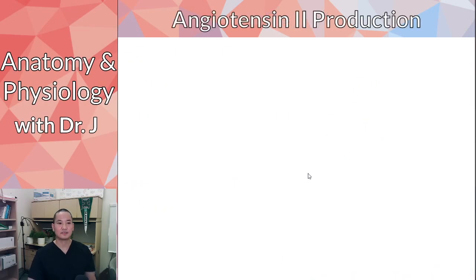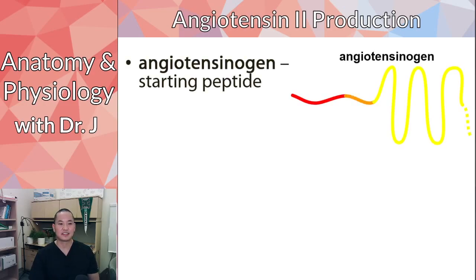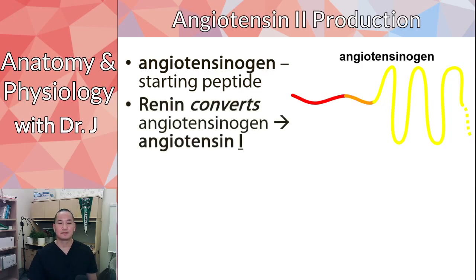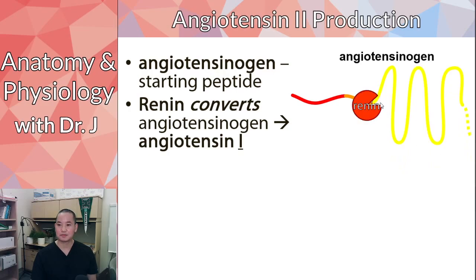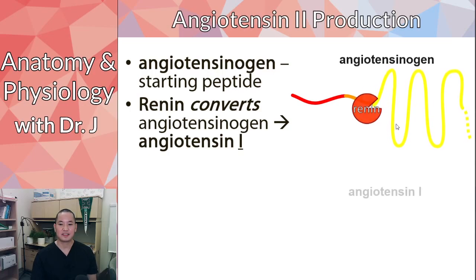What's the difference between angiotensin 1 and angiotensin 2? Think of angiotensinogen like 'genesis' — it's the beginning, the starting peptide. It's a very, very long polypeptide. Renin is an enzyme that cleaves this polypeptide, and the byproduct is called angiotensin 1 — a shorter polypeptide. So we went from angiotensinogen, a very long protein, and renin cleaved it to produce angiotensin 1.